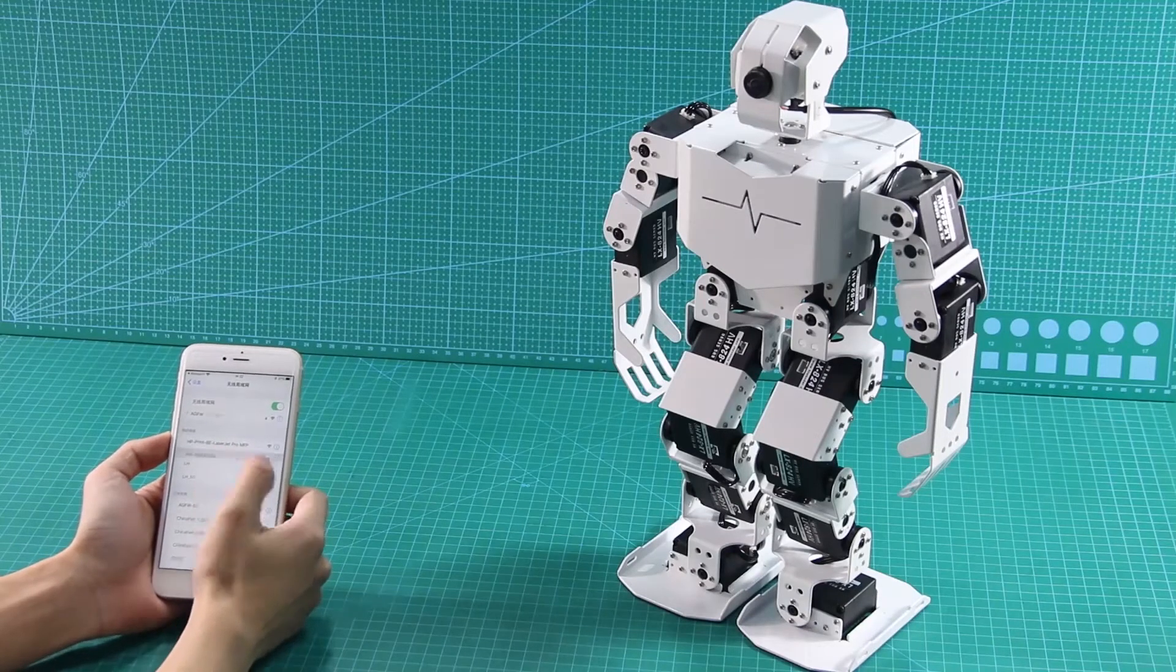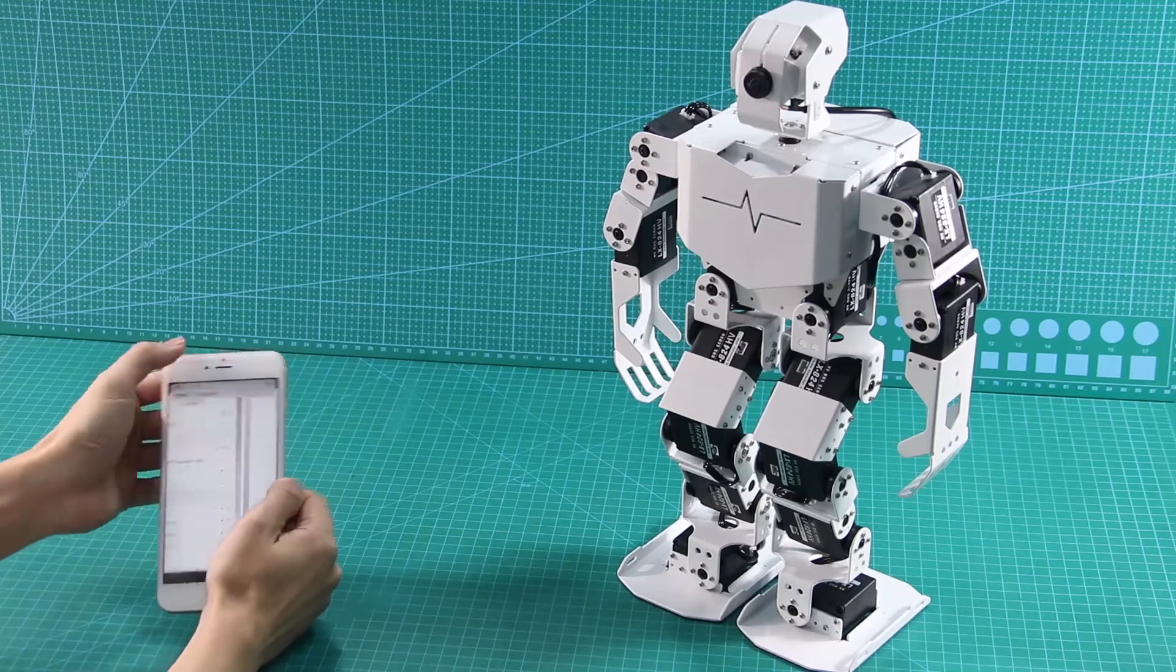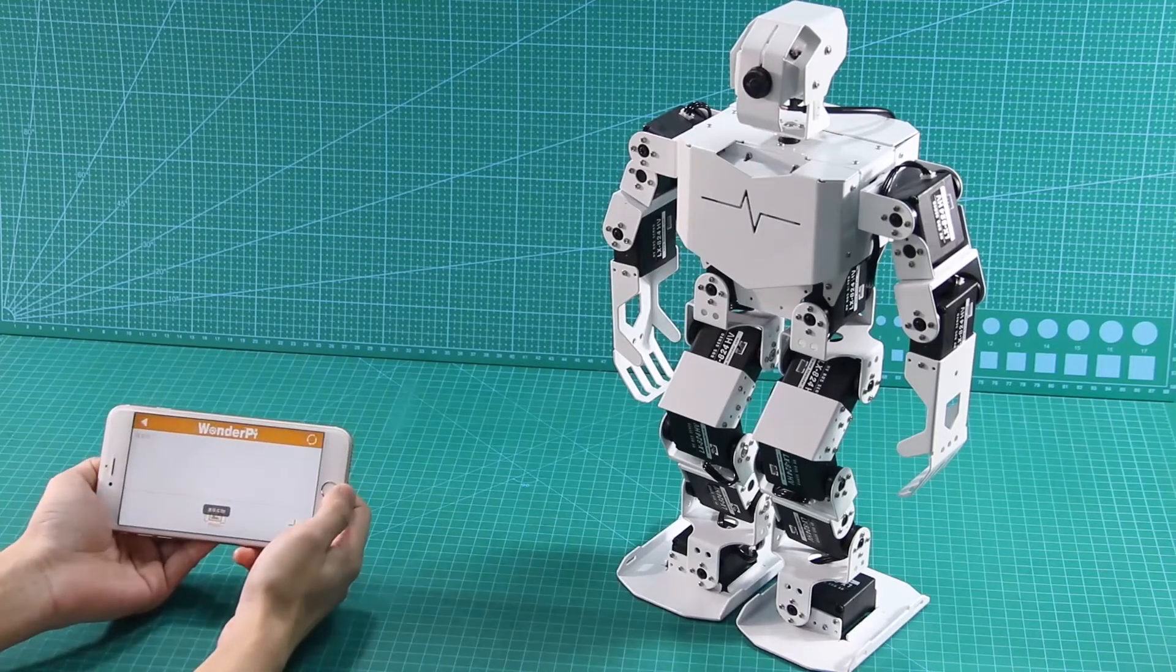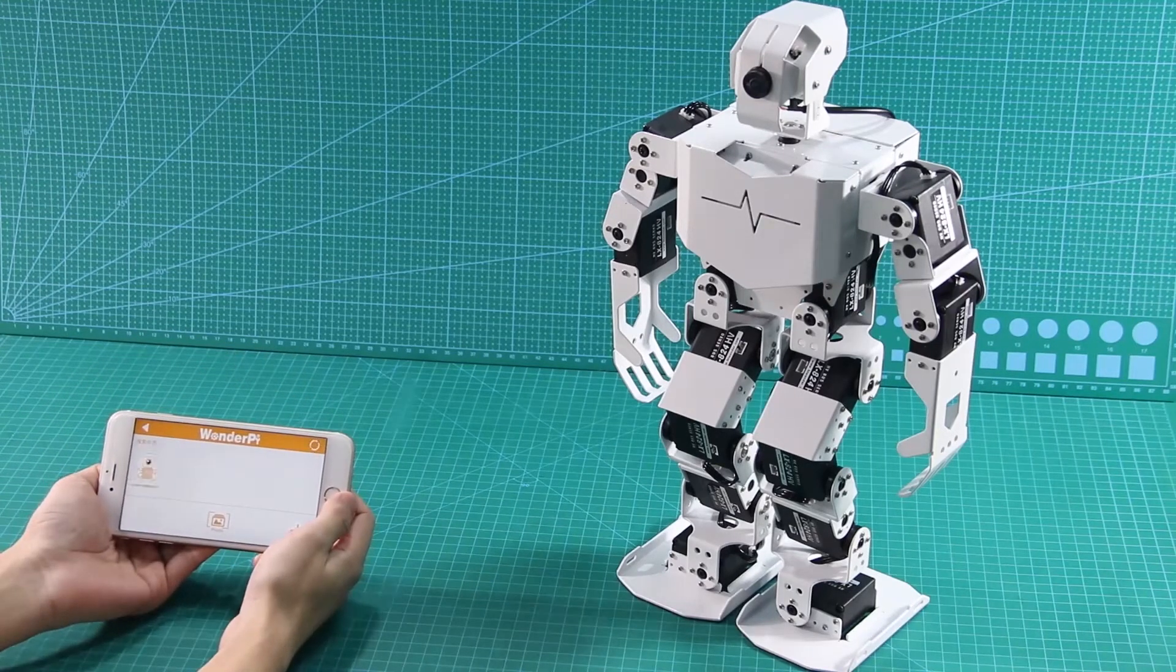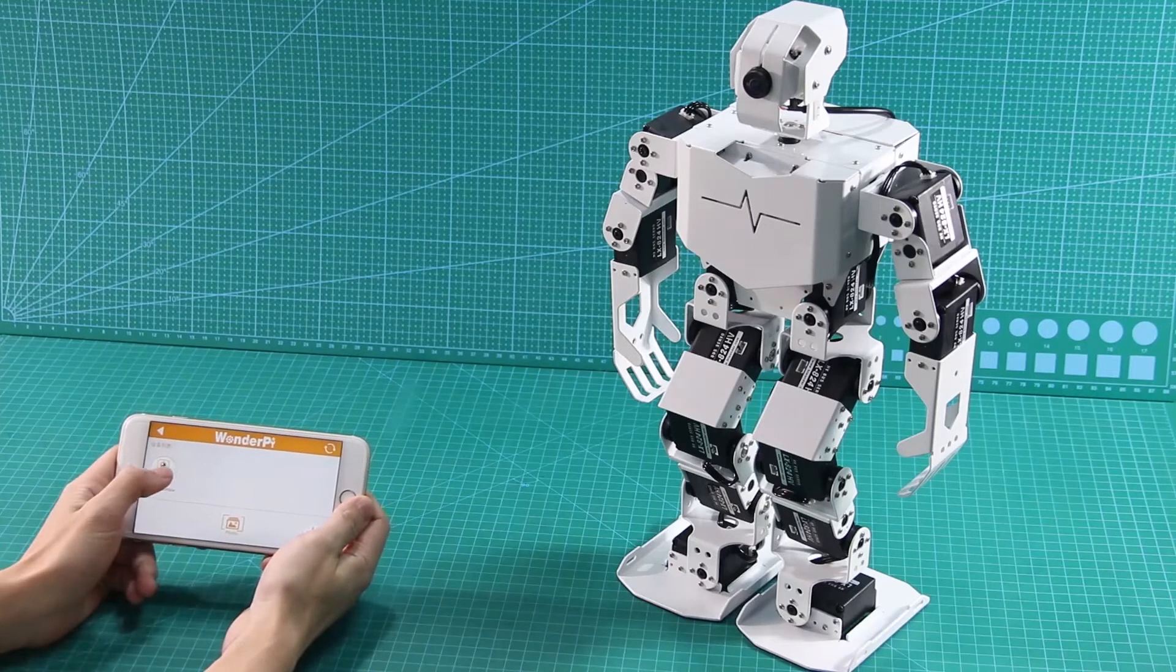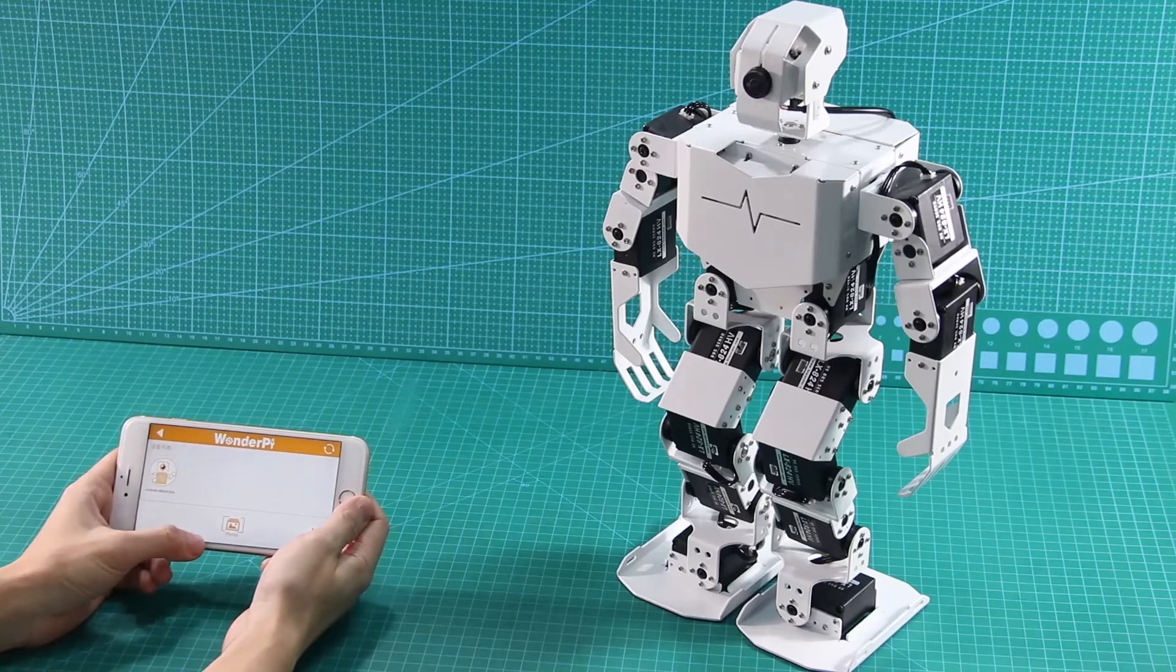Back to the WonderPi app after connecting Wi-Fi, the app will connect the device automatically. When the robot icon appears, it means that the connection is successful.